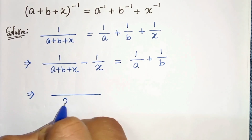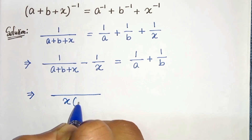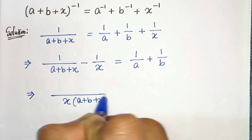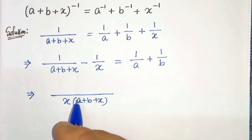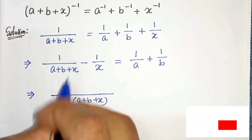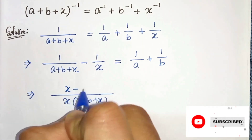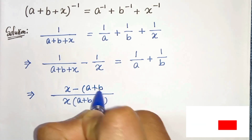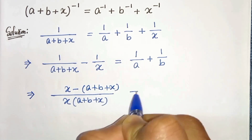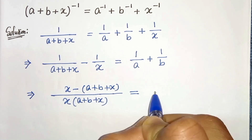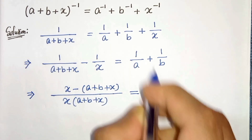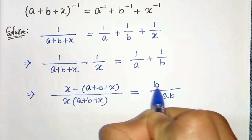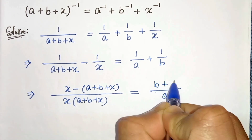Taking the LCM, in the denominator we get x times (a + b + x), and in the numerator we get x minus (a + b + x), which equals (b + a) divided by ab on the right hand side.